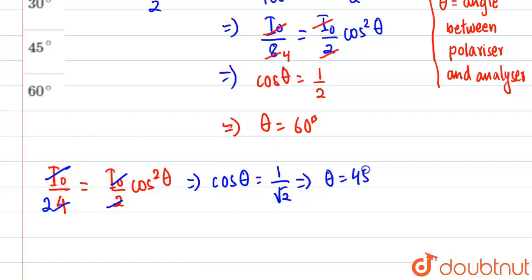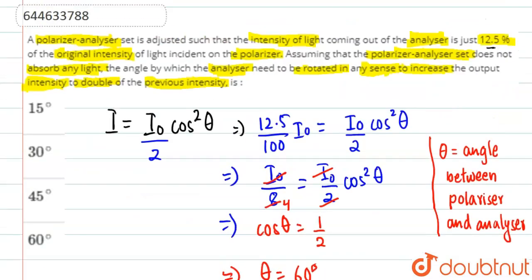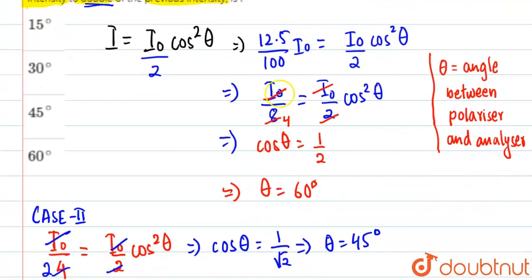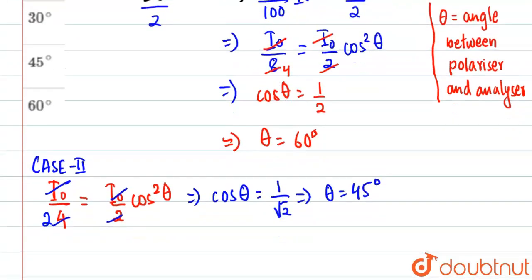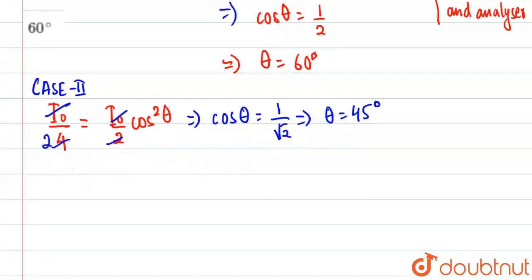You understood why I wrote this? Because in case 2, what happened in the question is we need to take into account that we need to increase the output intensity to double. So we need to double this intensity. Initially it was 12.5/100, which equals I₀/8. So we need to double it to I₀/4. So we got θ = 45°.